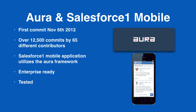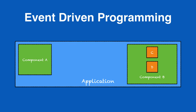The final thing we should talk about is event-driven programming. Event-driven programming is a different way of programming applications, and it works particularly well for component-based systems because it's a publish-and-subscribe model. Components can fire events, and in the Lightning components framework there are two different types of events. The first is a component event — if component A fires an event, only component A can subscribe to and handle it, which is done by component A having a handler for that particular event.